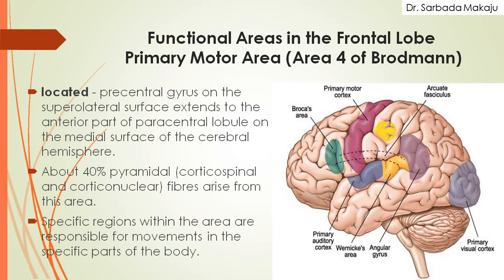The functional area present in the frontal lobe — the first one is the primary motor area. This portion is known as the primary motor area, present within the precentral gyrus, located on the superior lateral surface of the cerebrum. This primary motor area is also located on the medial surface of the cerebrum, where there is the paracentral lobe. The anterior part of the paracentral lobe represents the primary motor area, known as area number 4.